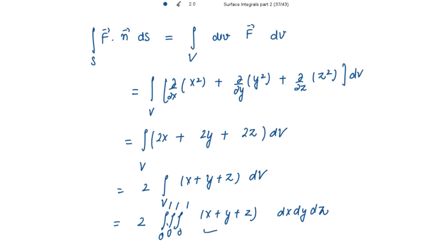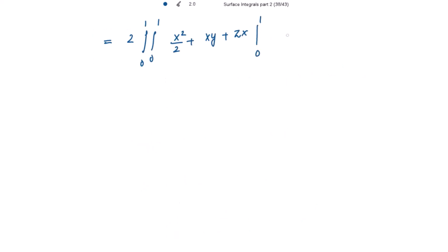Integrating with respect to x first, we get x²/2 plus yx plus zx, with limits from 0 to 1. When putting the upper limit for x, we get 1/2 plus y plus z, and when putting the lower limit we get 0.